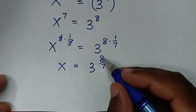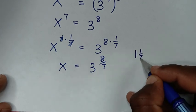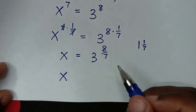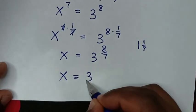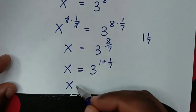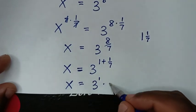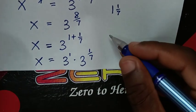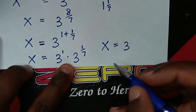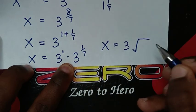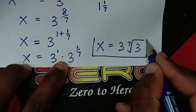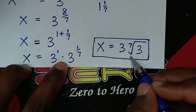From the power of 8 over 7, we can write 8 over 7 as 1 plus 1 over 7. So x equals 3 to the power of 1 plus 1 over 7, which is 3 to the power of 1 times 3 to the power of 1 over 7. Therefore x equals 3 times the 7th root of 3. This is the final answer for the value of x: 3 times the 7th root of 3.